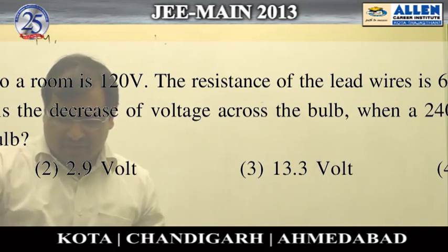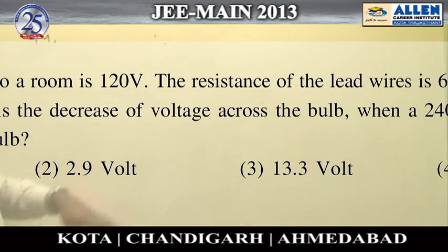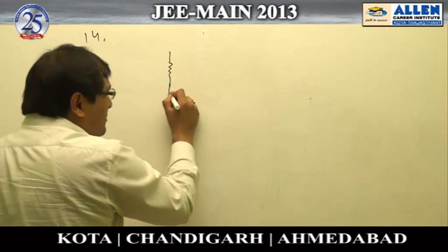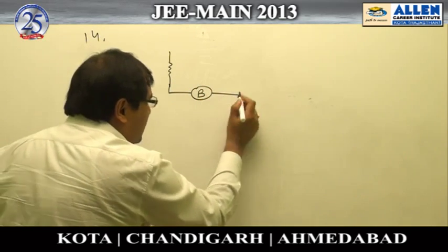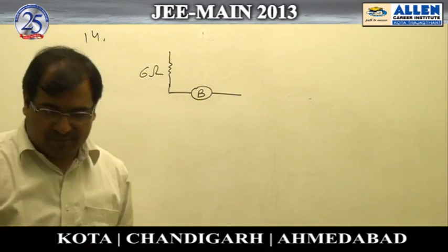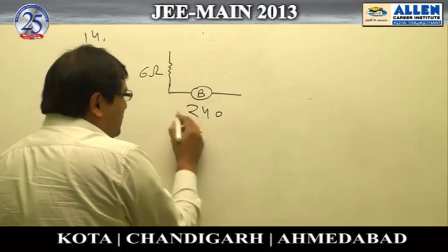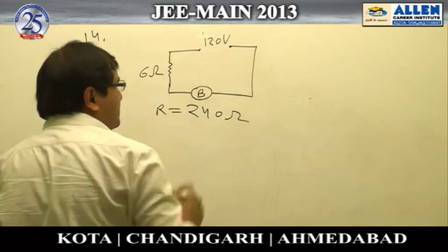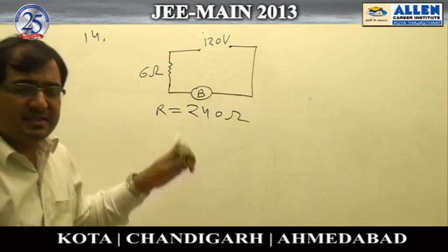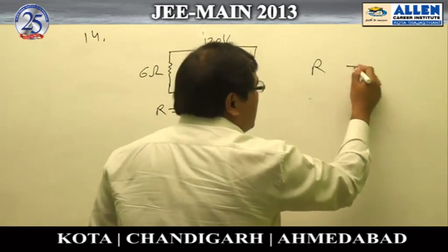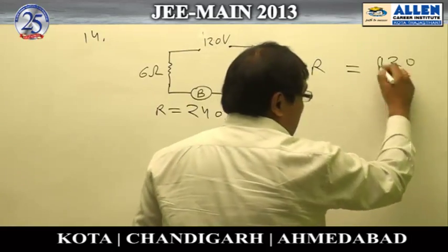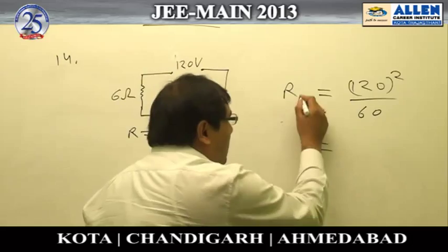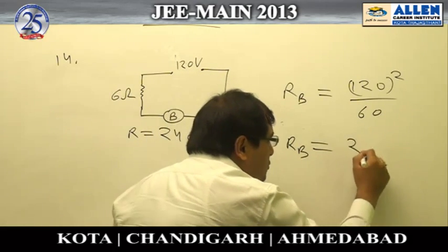Question number 14 requires a step-by-step approach. First, consider only the bulb in the circuit: the lead wire has resistance 6 ohm, and the bulb's resistance can be calculated. The bulb is rated at 60 watts with a rated voltage of 120 volts, giving a bulb resistance of 240 ohm. The main supply voltage is 120 volts.